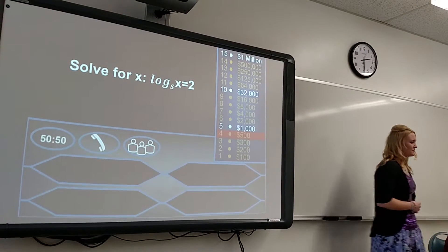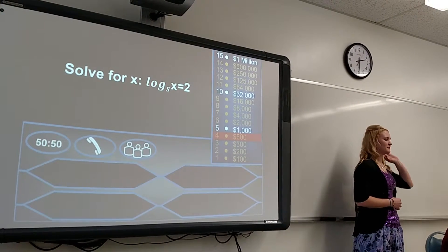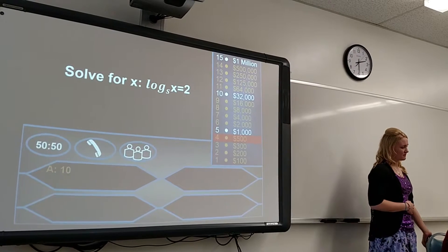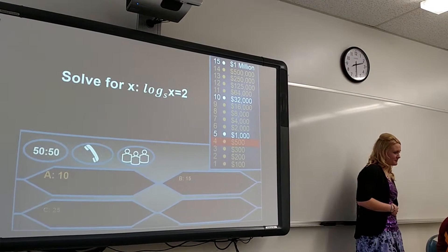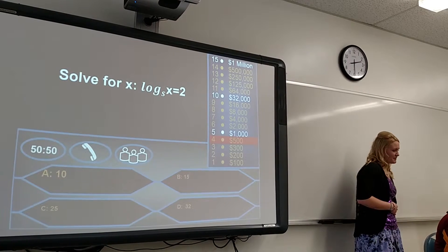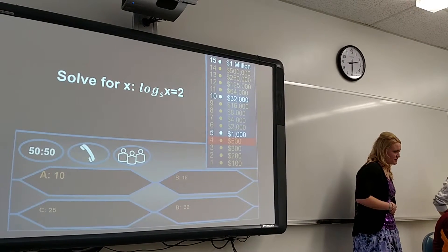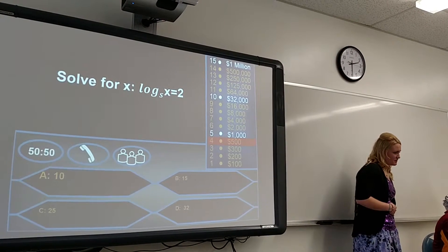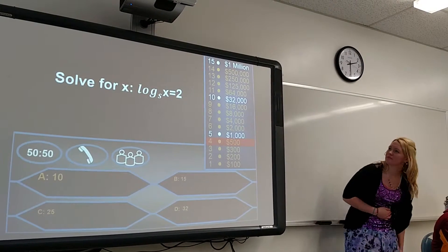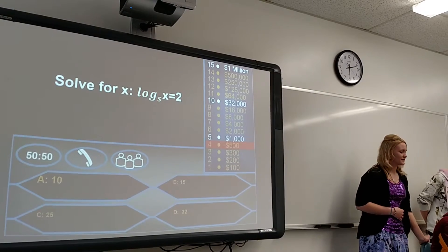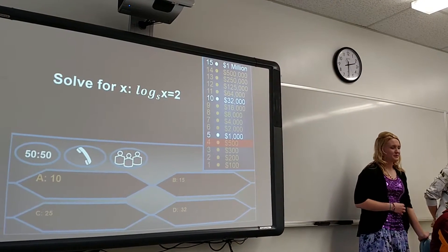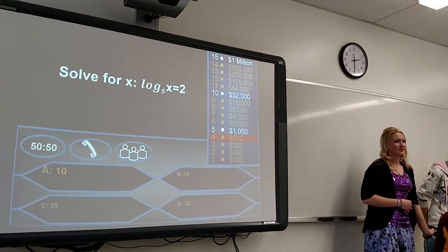Okay, I want you guys to solve this problem for x: log base 5 of x equals 2. So A: 10, B: 15, C: 25, D: 32. Is that a 5 or an S? What is the base? The base is 5?